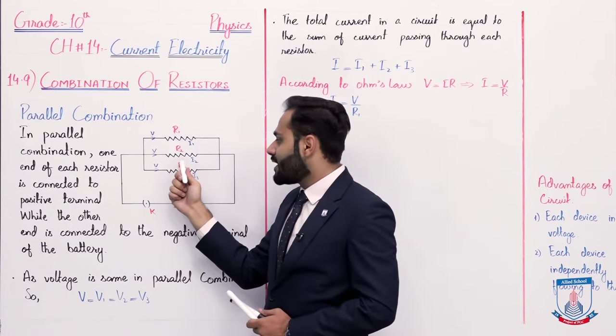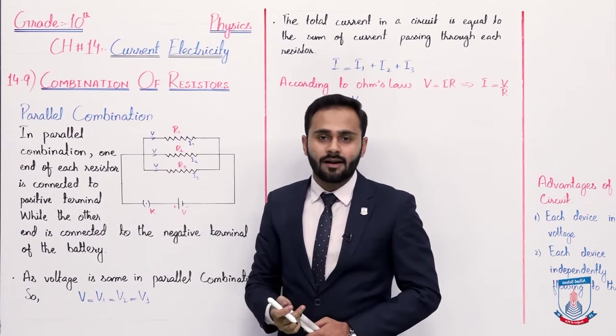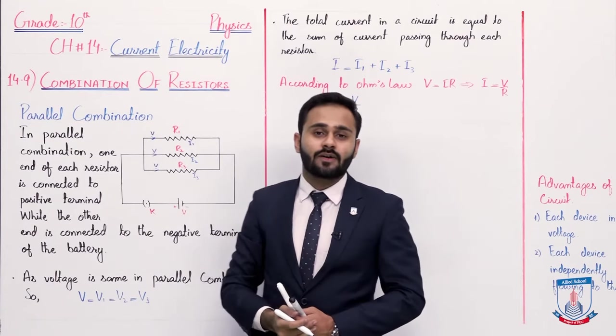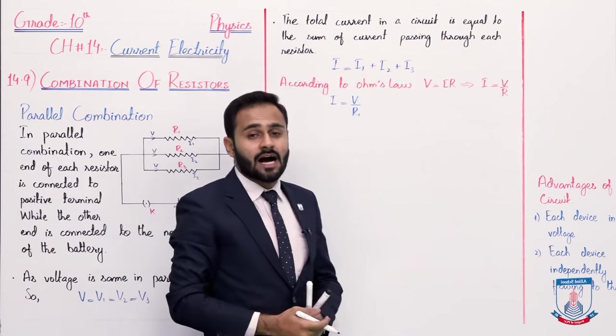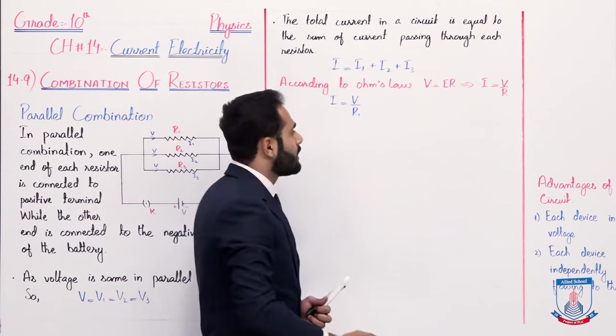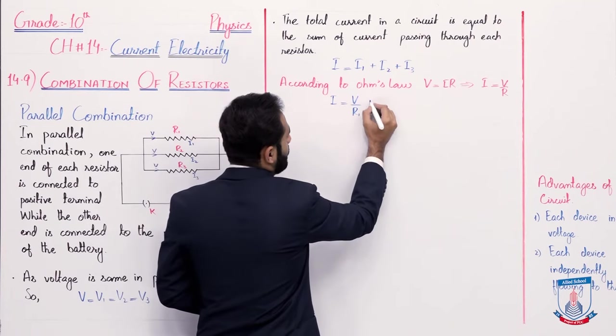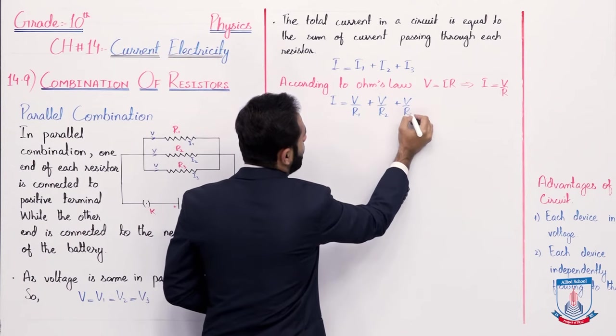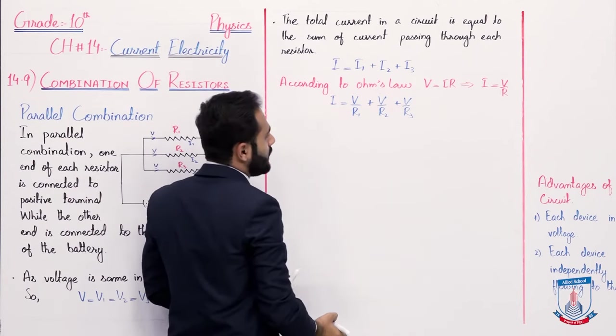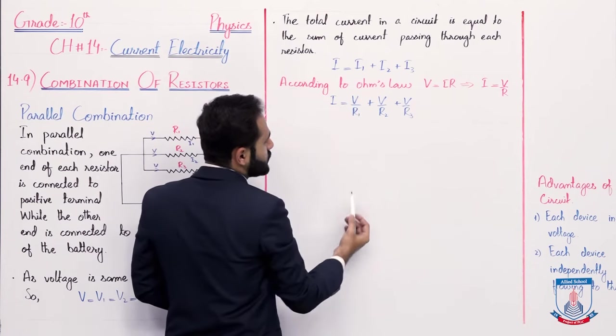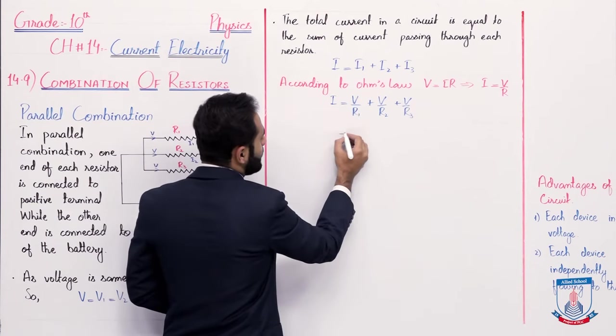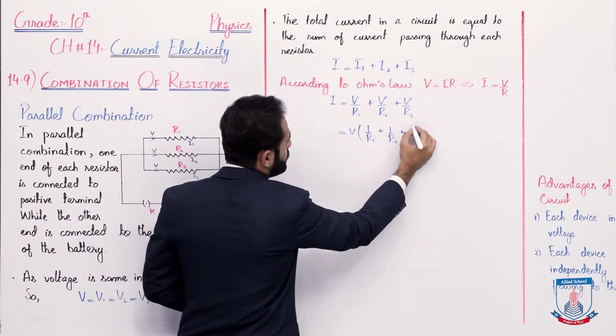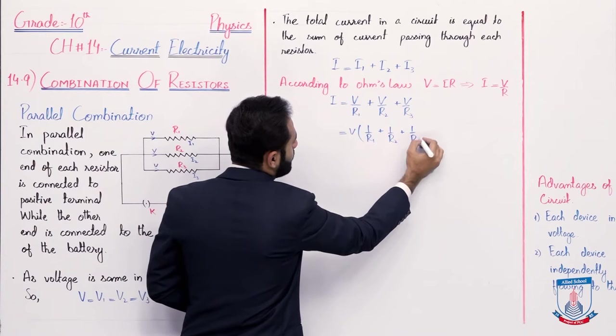Now, applying Ohm's law, I1 is equal to V1 over R1, I2 is equal to V2 over R2, and I3 is equal to V3 over R3. So the total current I equals V multiplied by 1 over R1 plus 1 over R2 plus 1 by R3.